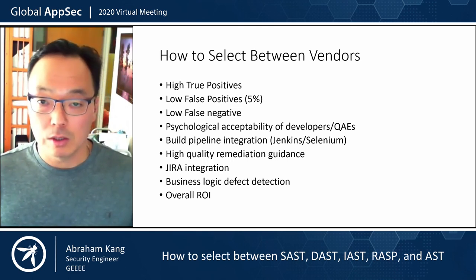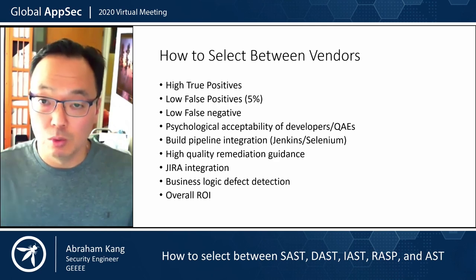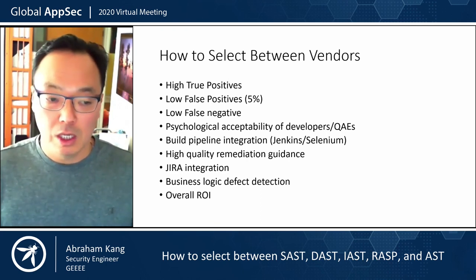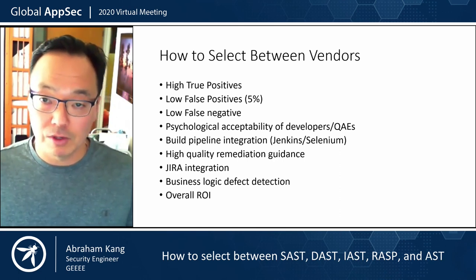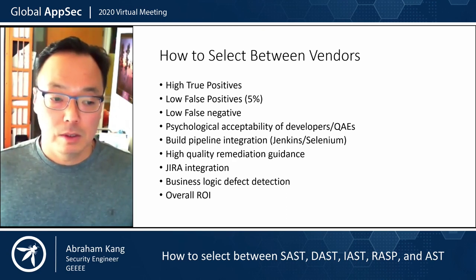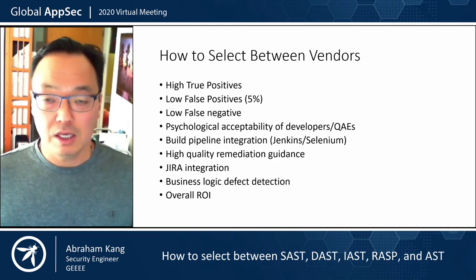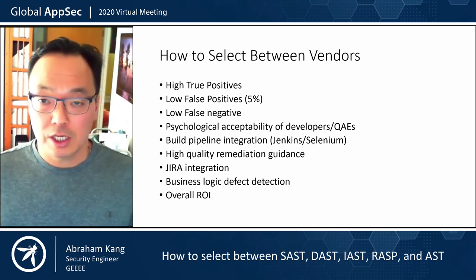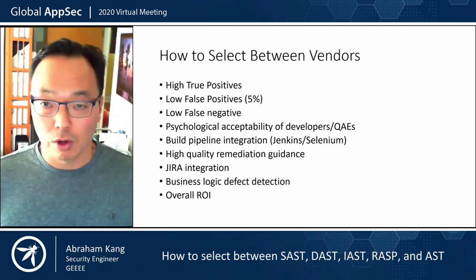You're also going to want to look at how well the vendor integrates with your pipeline. Because you want to get developers involved in being part of the security solution — the whole organization including QA people — it's important to look at how well the vendor explains the vulnerability. Is it going to be something that a developer or QA engineer is able to read and understand? You also want it to integrate with your bug tracking systems, and if it can handle business logic, consider that as well because it allows you to standardize how you're handling business logic vulnerabilities. And finally, you want to calculate your overall return on investment.